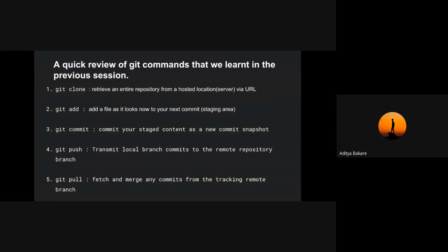The first command is git clone. What git clone does is it retrieves an entire repository from the hosted location via URL. Our hosted repository was on GitHub, so we used git clone to clone the repository on our local machine.